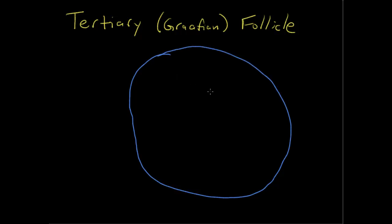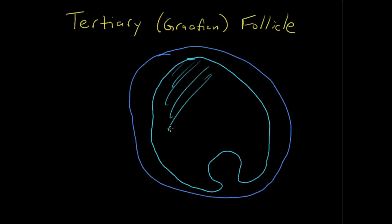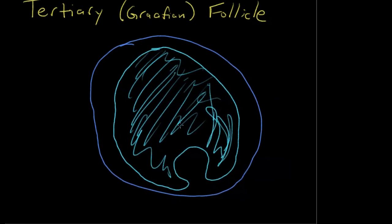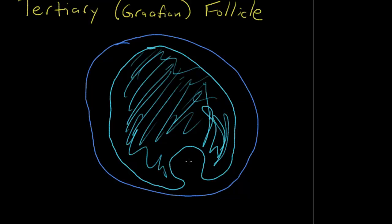Something like so. And we have a very, very, very large antrum. Something like so. Here's the antrum right in here. There we go. So, this is going to be just going to kind of fill that in. So, you realize that this is full of that liquor folliculi. So, this is all fluid filled. Our oocyte is now pushed way over here, over to the side. Here's our oocyte down here.